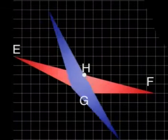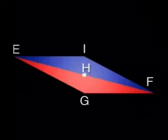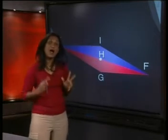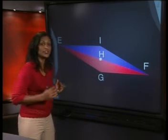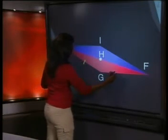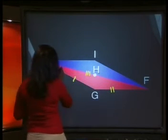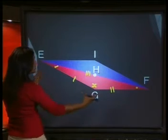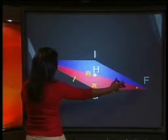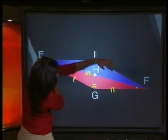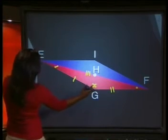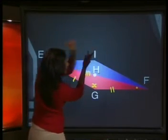After we rotated the triangle EFG through 180 degrees, we've created a new shape. I've called this new point I. Let's mark our original triangle with all the sides and angles. When we rotated the red triangle, it moved all the way around like this. This means that side EG rotated all the way around to become IF.